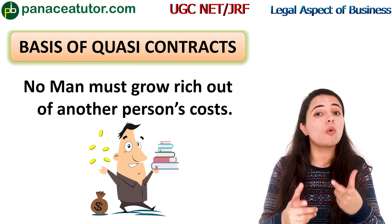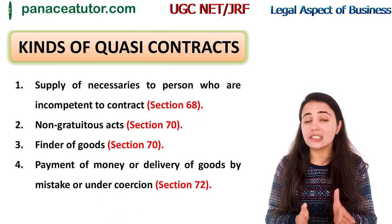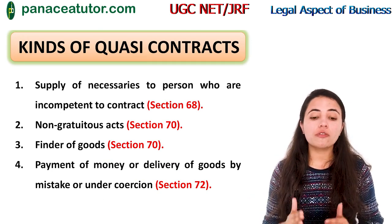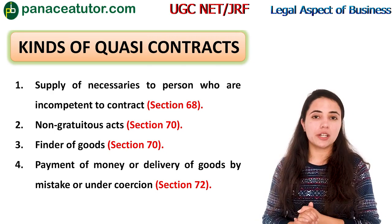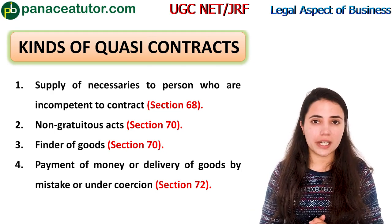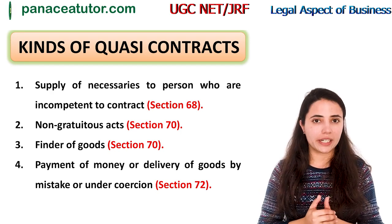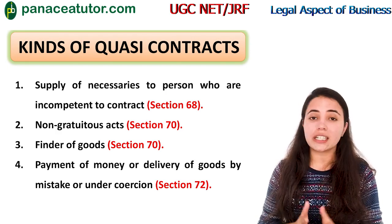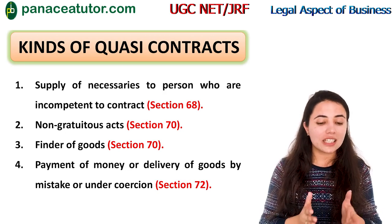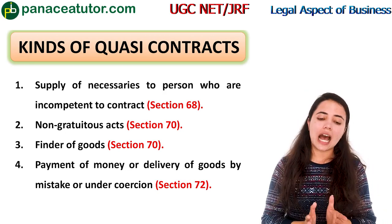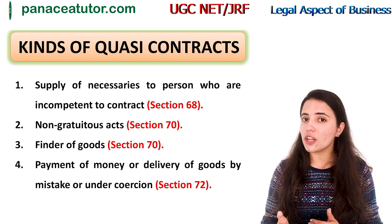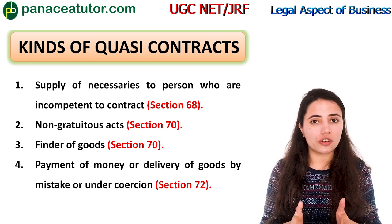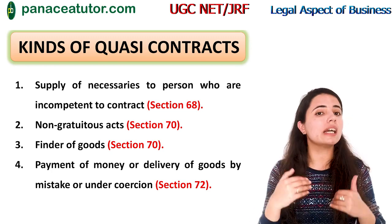Now we will learn the different kinds of quasi-contracts in detail. The first kind is: supply of necessaries to persons who are incompetent to contract — for example, people of unsound mind or lunatic persons. The second is non-gratuitous act. The third is the finder of goods. And the last is payment of money or delivery of goods under any mistake or coercion.